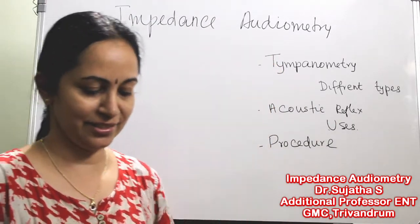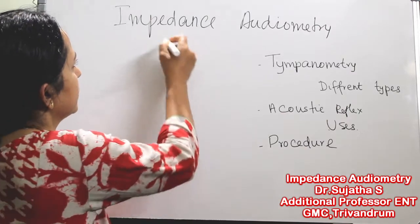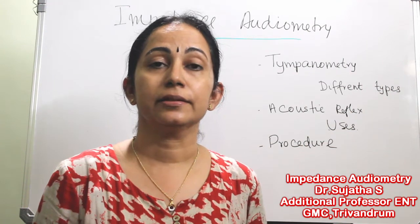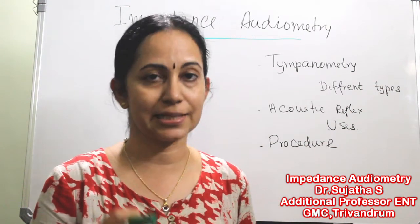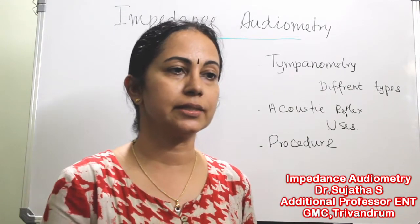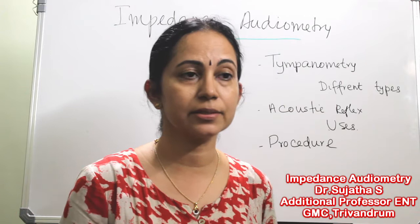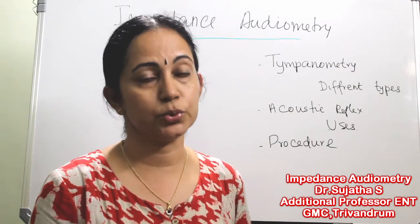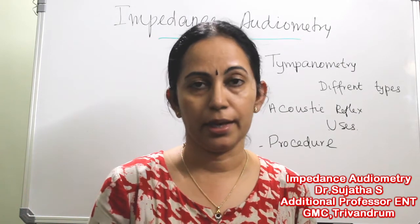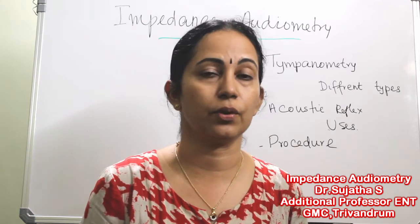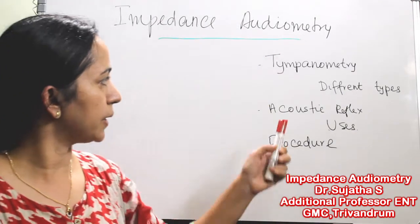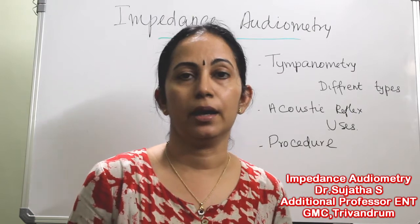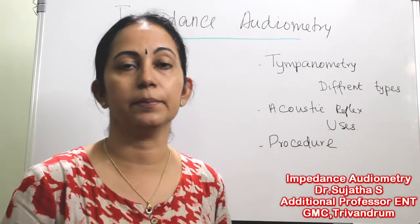Impedance audiometry is the measure of resistance or impedance offered by the tympanic membrane and the middle ear conducting mechanism to sound pressure transmission. This is an objective method of evaluation of hearing, and it contains two parts: tympanometry and acoustic reflex. Today I will deal with impedance audiometry, covering what is tympanometry, what is acoustic reflex, what are the uses, and I will also show you how to perform a tympanometry.